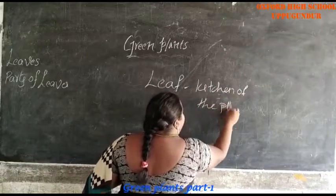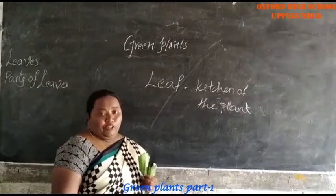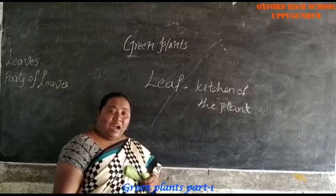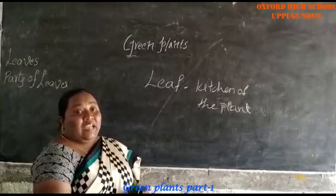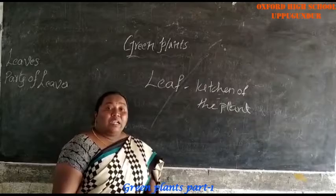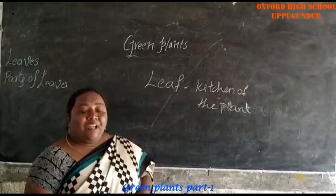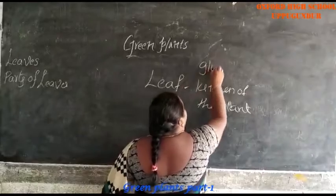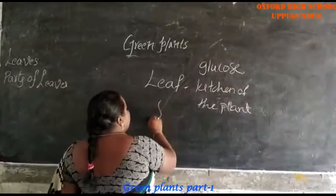Leaf is called kitchen of the plant because it prepares food. How it will prepare the food? It prepares the food by using air, water, and sunlight. This is called photosynthesis. It prepares the food in the form of glucose. The plants will prepare the food in the form of glucose.